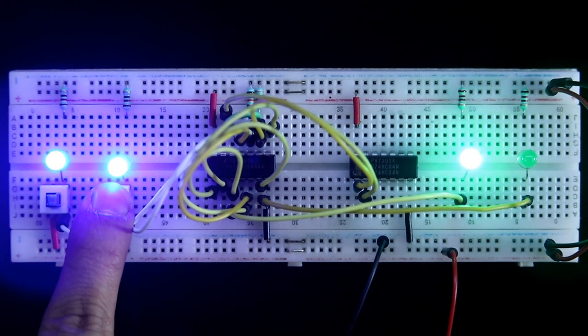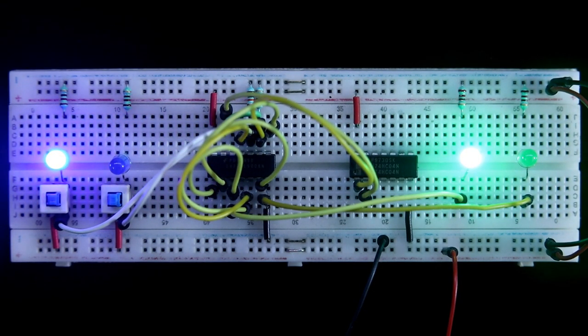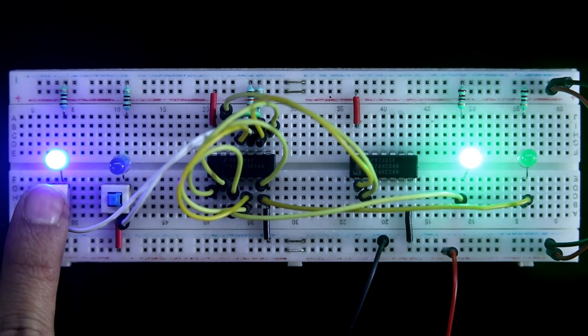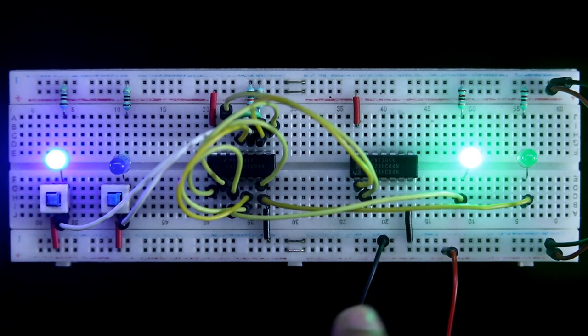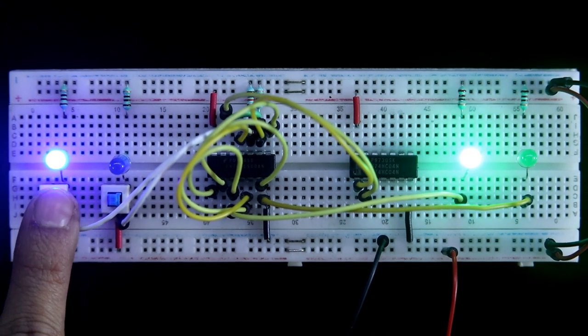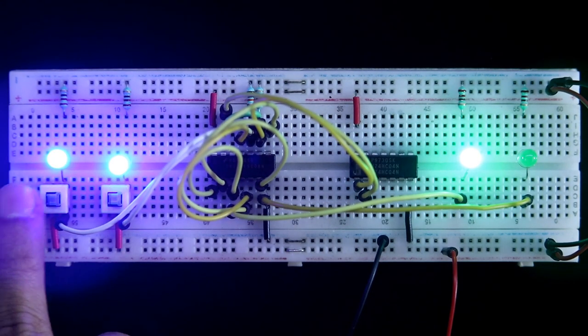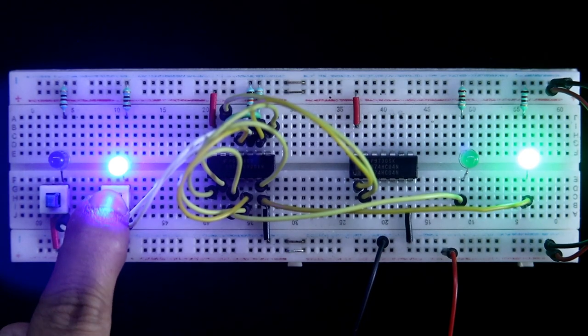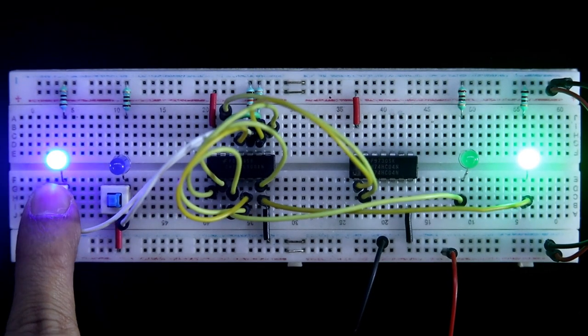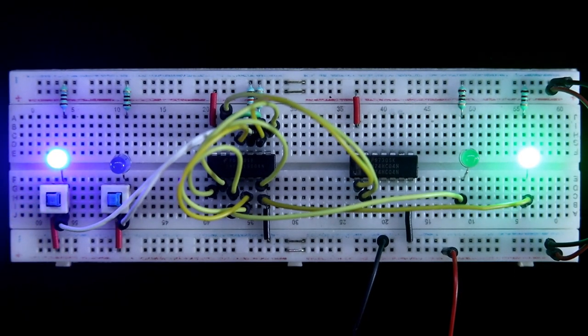So this is what we are getting. And now if I remove the clock, so this should be our memory. Now whether D is zero or one, it will not change. Again, clock one, D zero, we are getting this. Now clock zero, it will not change. So this is how our D flip-flop is working.